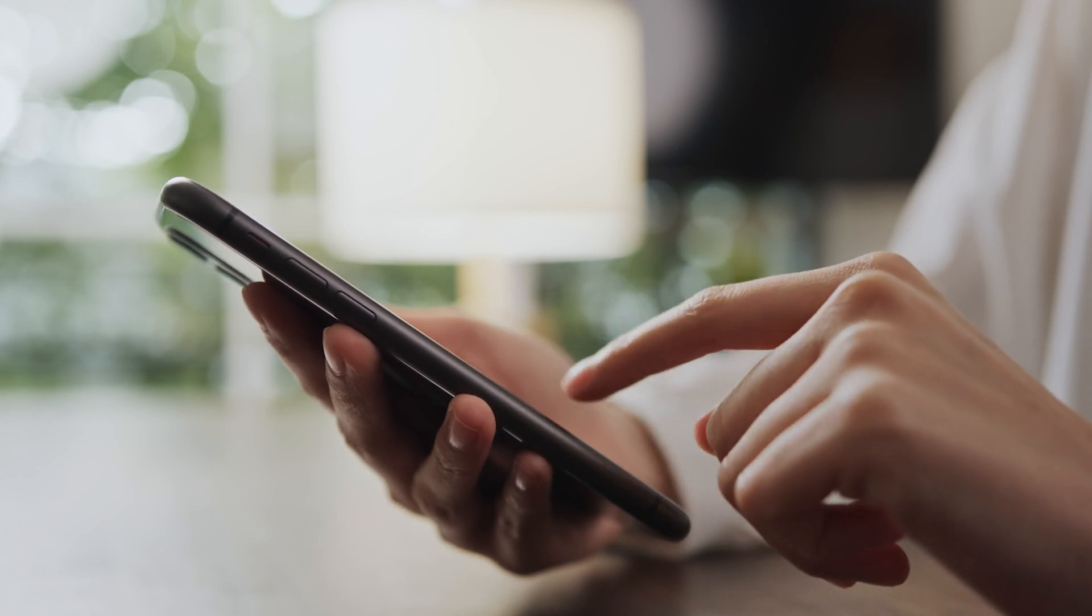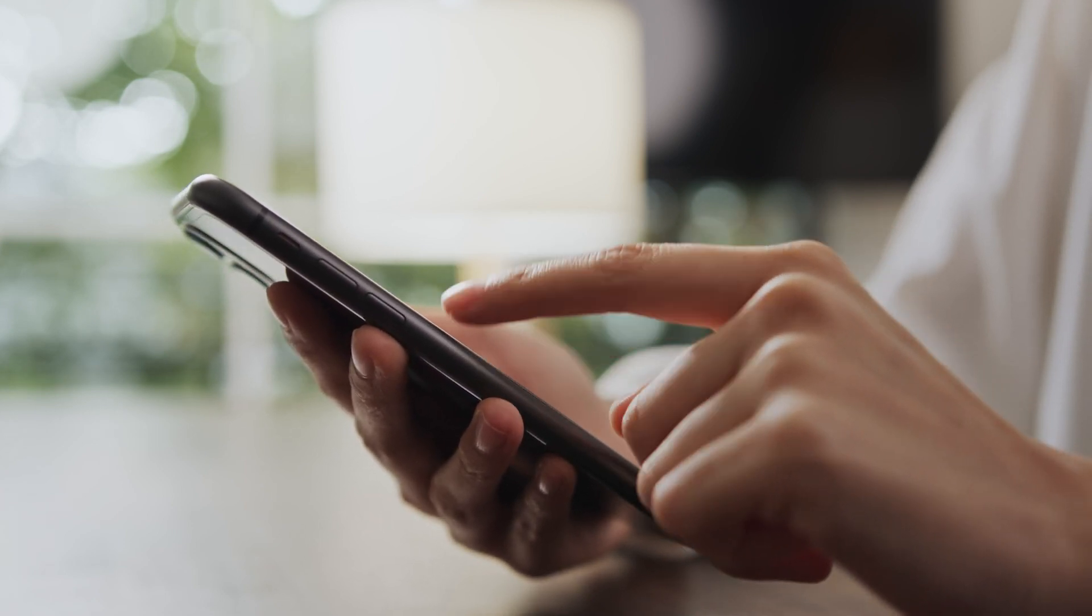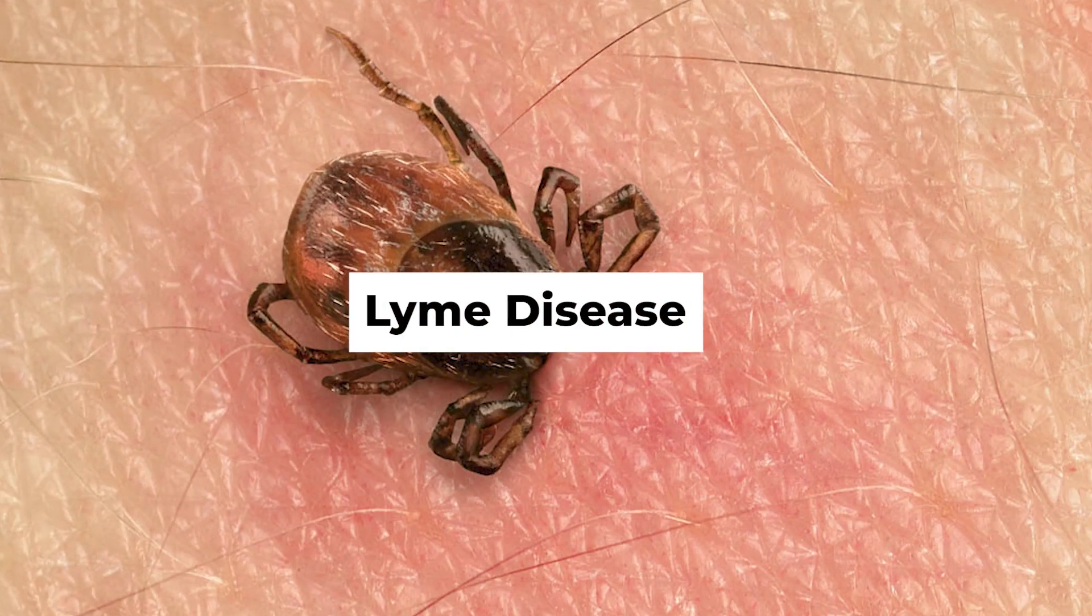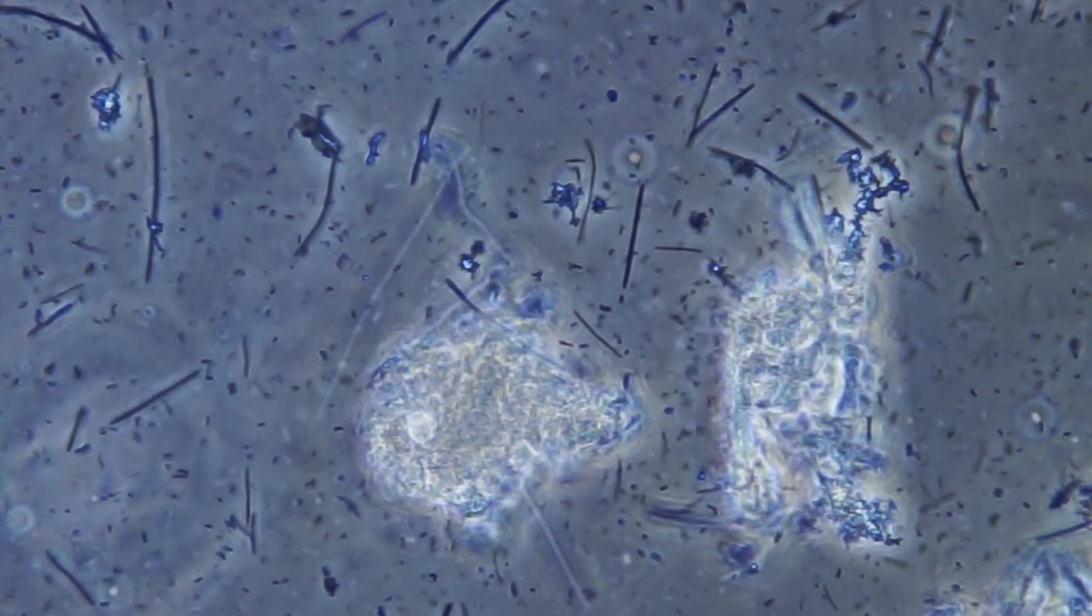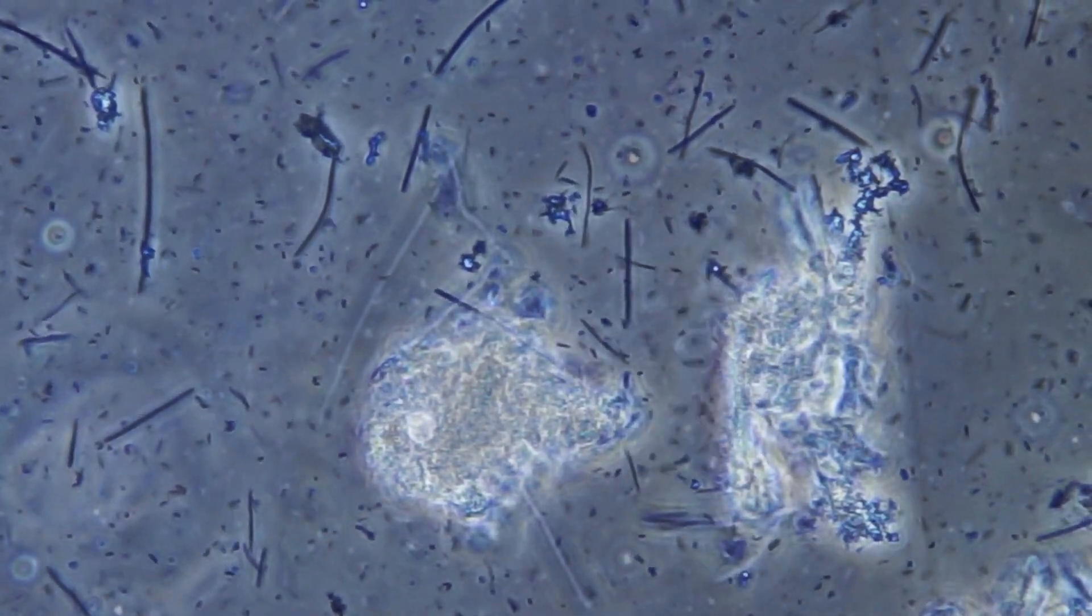So if you want to know about the different forms of Lyme, keep watching. First up, what is Lyme disease? Lyme disease is a vector-borne illness caused by the bacteria Borrelia burgdorferi found in ticks.